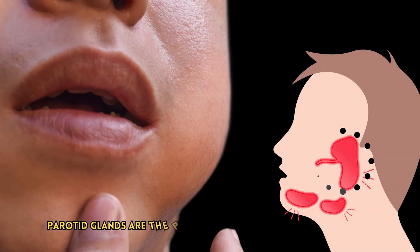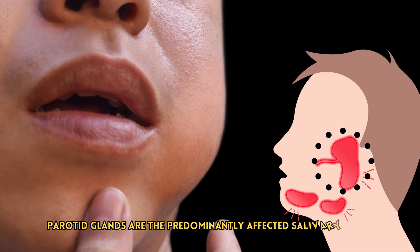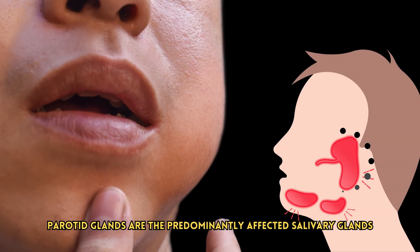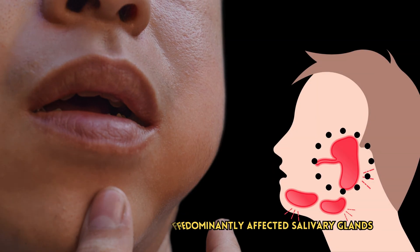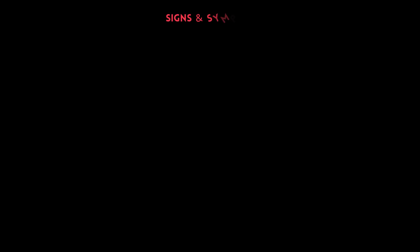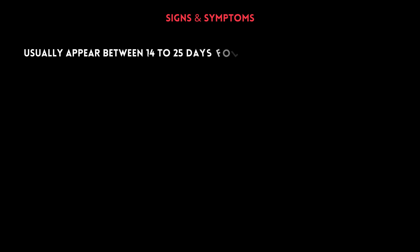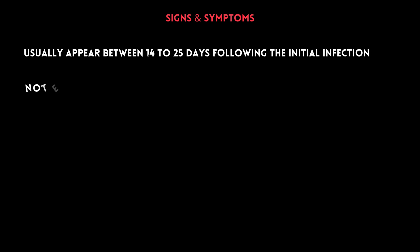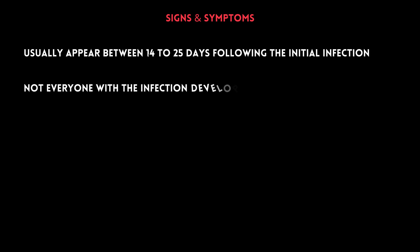Parotid glands are the predominantly affected salivary glands. The symptoms of mumps usually appear between 14 to 25 days following the initial infection. It is important to note that not everyone with the infection develops symptoms.